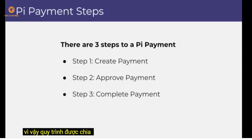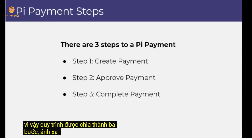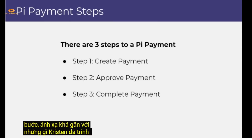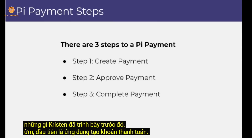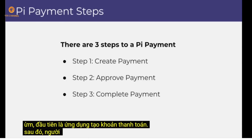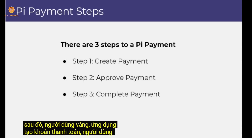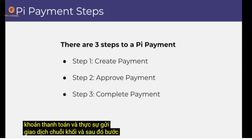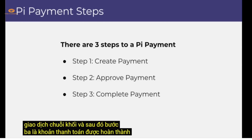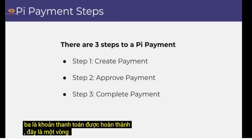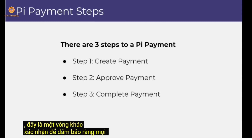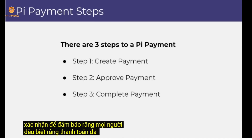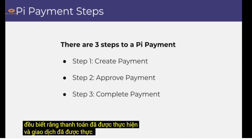The process breaks down into three steps, which map closely to what was shown in the UI demo. Step one: the app creates the payment. Step two: the user approves the payment and submits the blockchain transaction. Step three: the payment gets completed — another round of confirmation to ensure all parties are aware the payment has been made and the transaction executed on the blockchain.